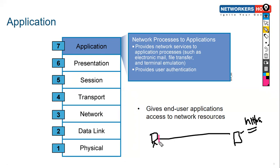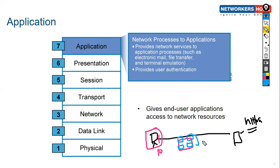These protocols are part of the Application layer. You can think of the Application layer as a user interface through which we interact with the application. For example, on a Windows 10 desktop, we use different applications like Google Chrome, Firefox, PuTTY, and FTP — all of these represent the Application layer.